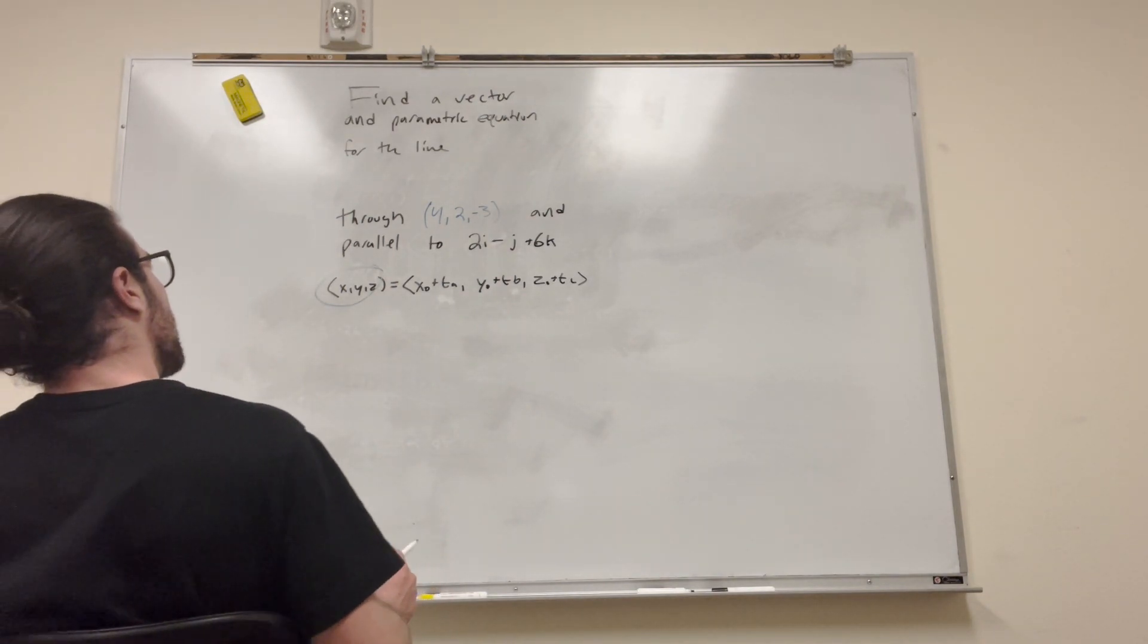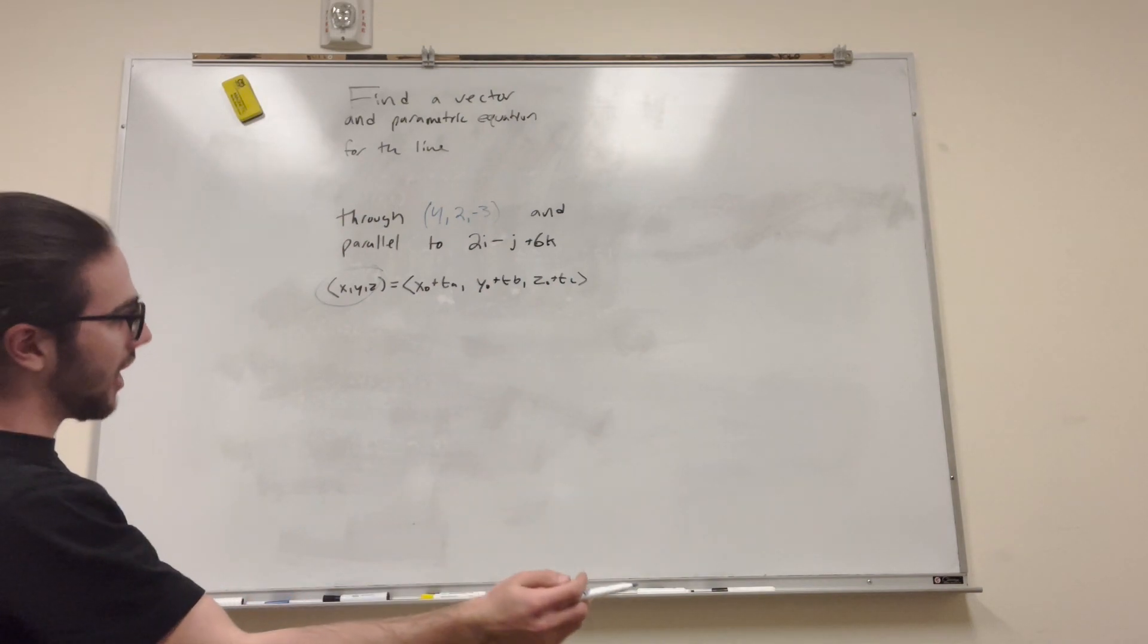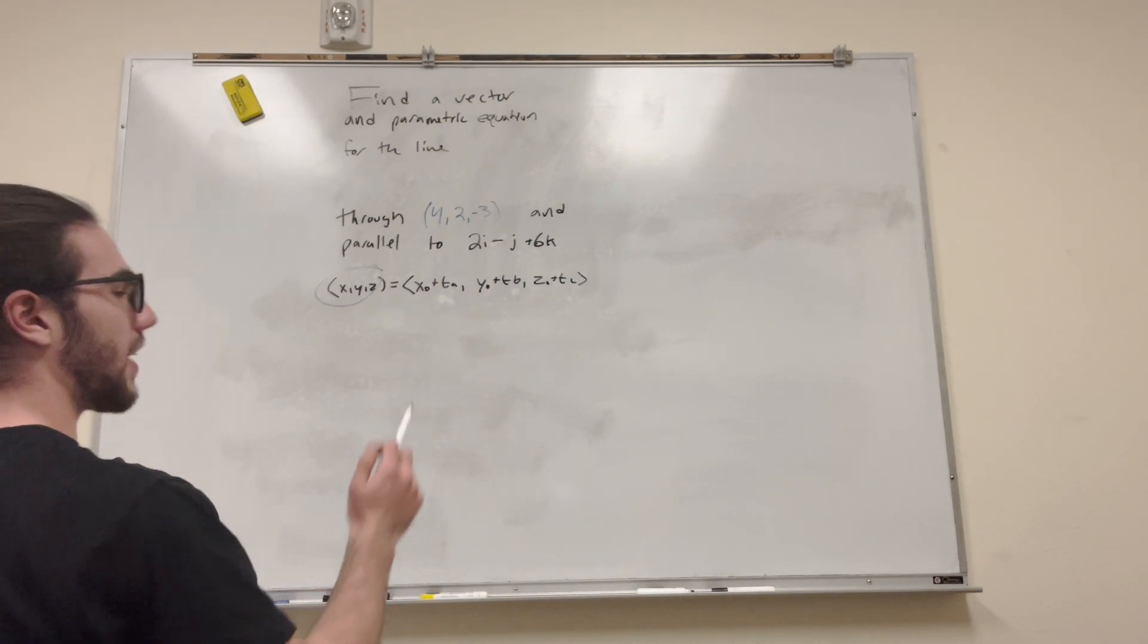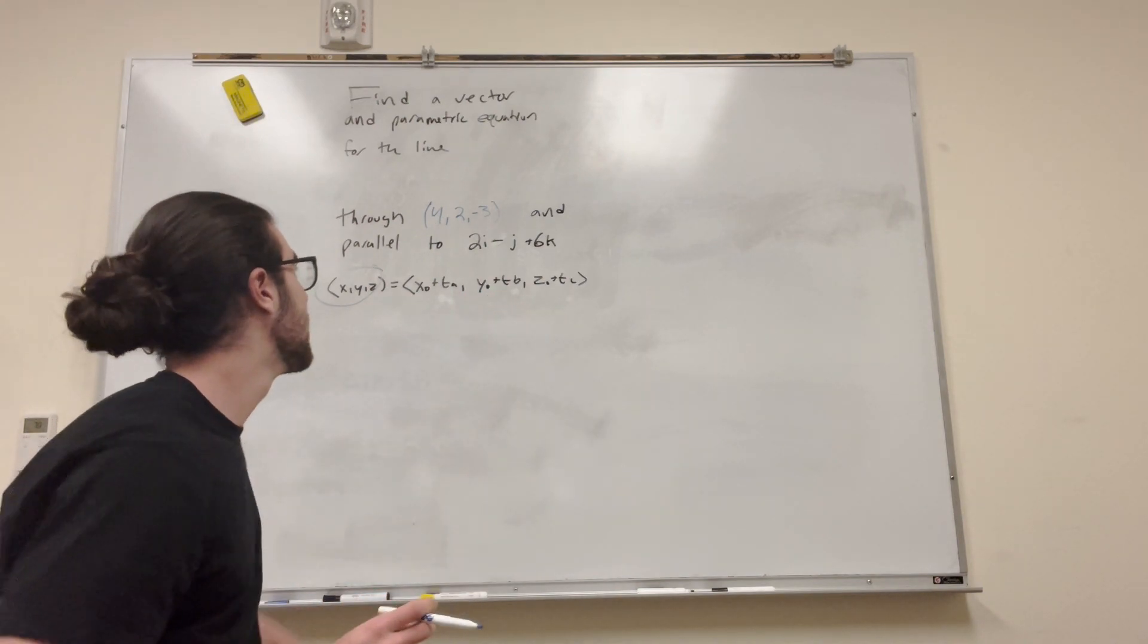So let's see what we've got here. Well, it says through 4, 2, negative 3, so we can use that as X naught, Y naught, Z naught, in parallel to another vector, which that is what we can actually use for A, B, and C.